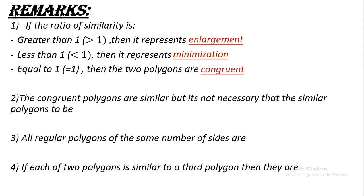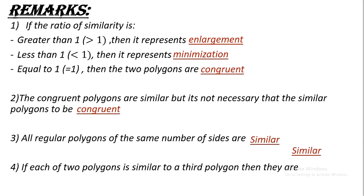Remark number two: congruent polygons are similar, but it is not necessary that similar polygons be congruent. Remark number three: all regular polygons of the same number of sides are similar. Remark number four: if each of two polygons is similar to a third polygon, then they are similar to each other — like if Ahmad is similar to his brother and his brother is similar to his father, then Ahmad and his father are similar.